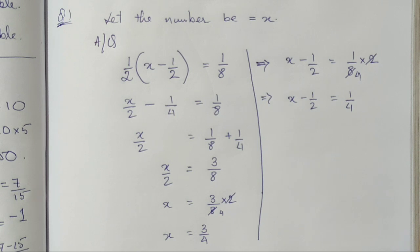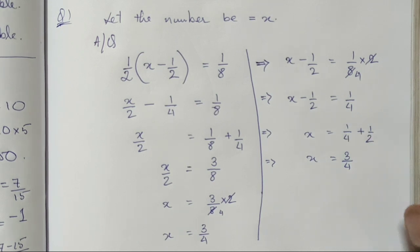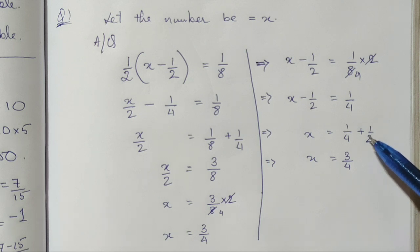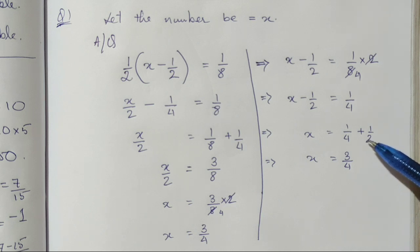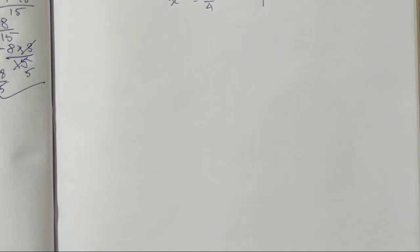The second method: up to a point it is the same, but then we can directly transpose the one-half to the other side since it is multiplied with the whole term and there is no addition or subtraction involved. We solve for x and get the same answer. Therefore the number is three-quarters (3/4).